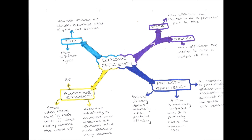There are many different types of economic efficiency. Economic efficiency can be measured in a few different ways. Static economic efficiency is how efficient the economy or a market is at a particular point in time. Dynamic economic efficiency is how efficient the market or the economy is over a period of time.